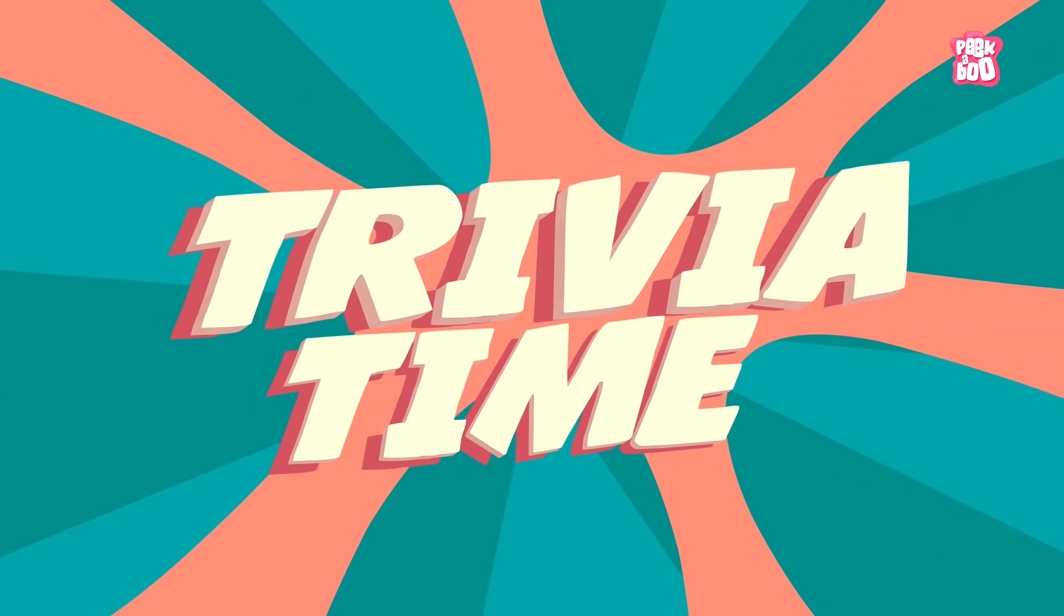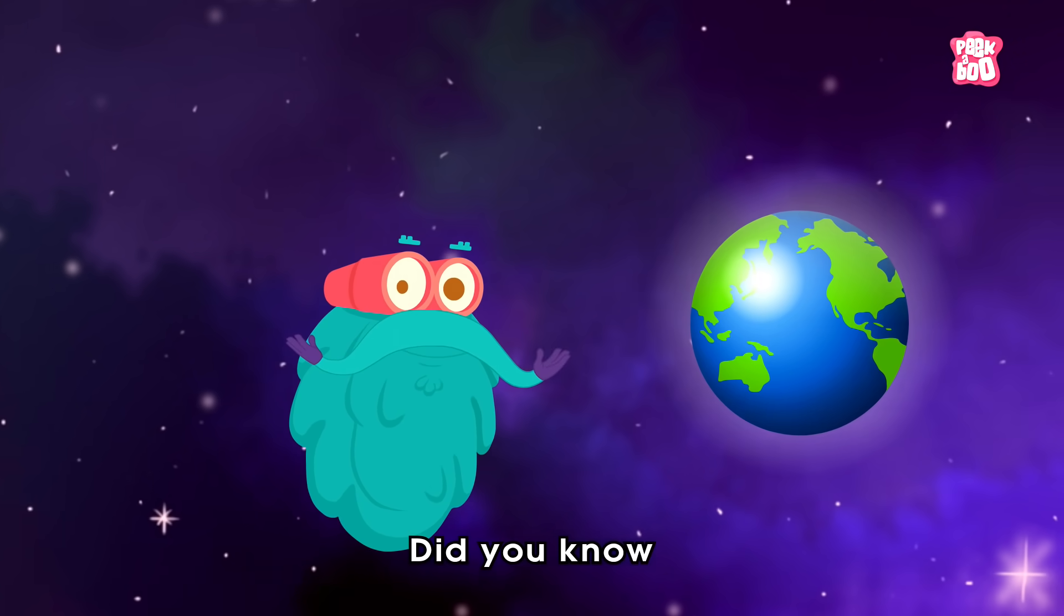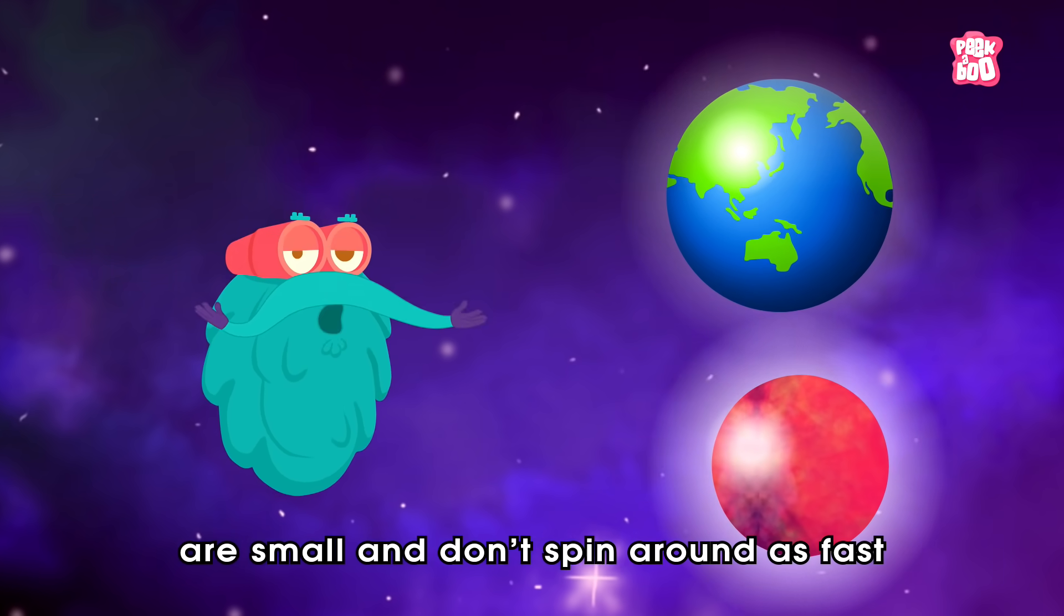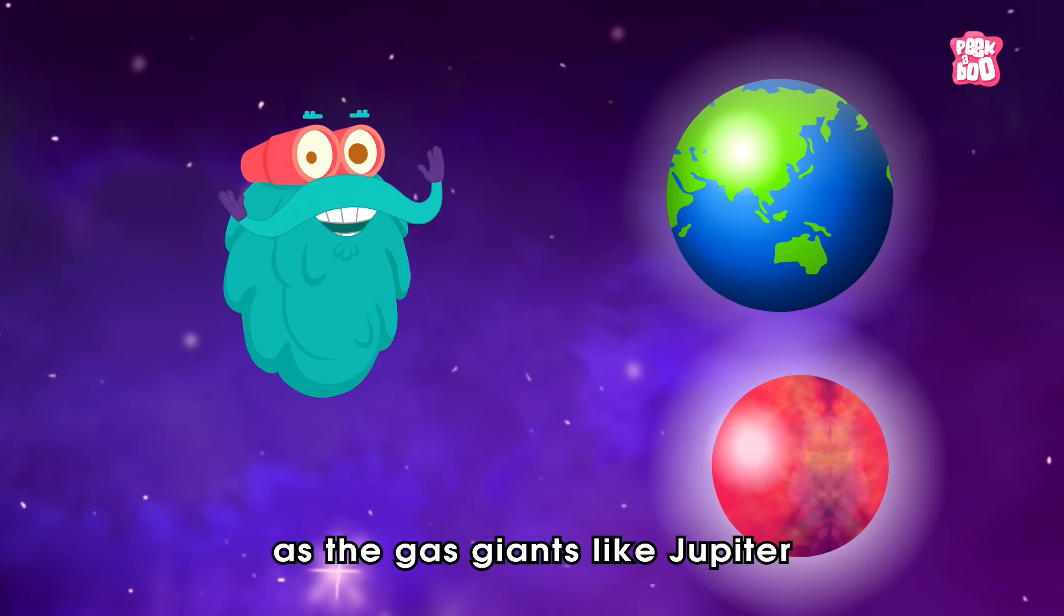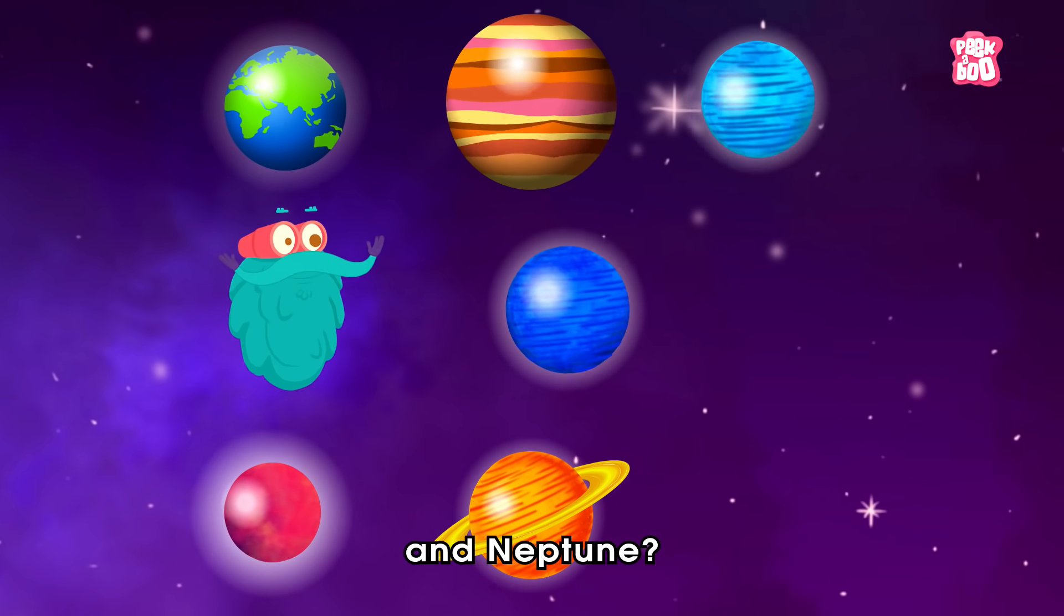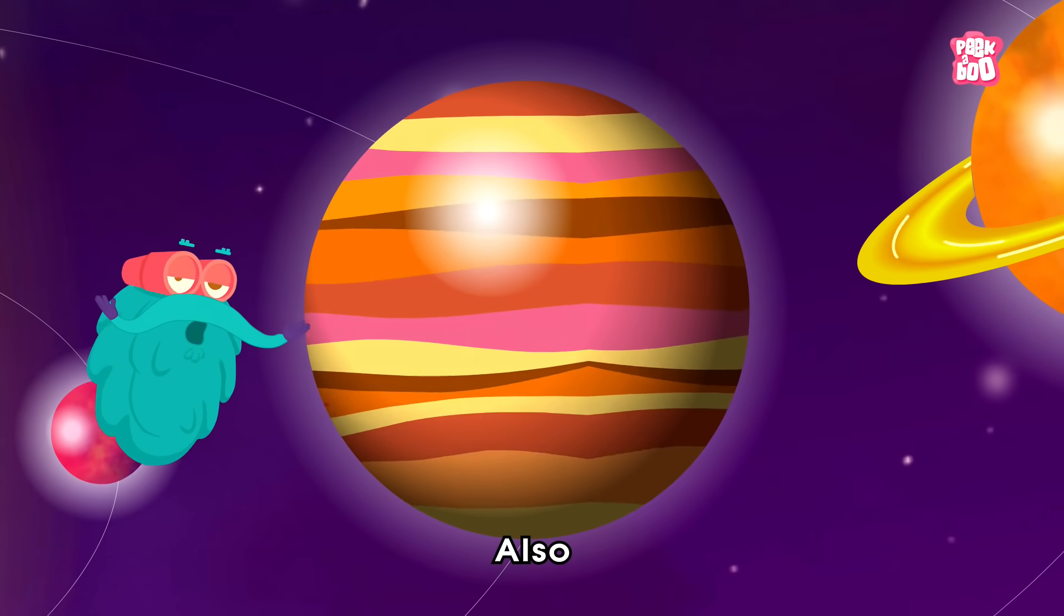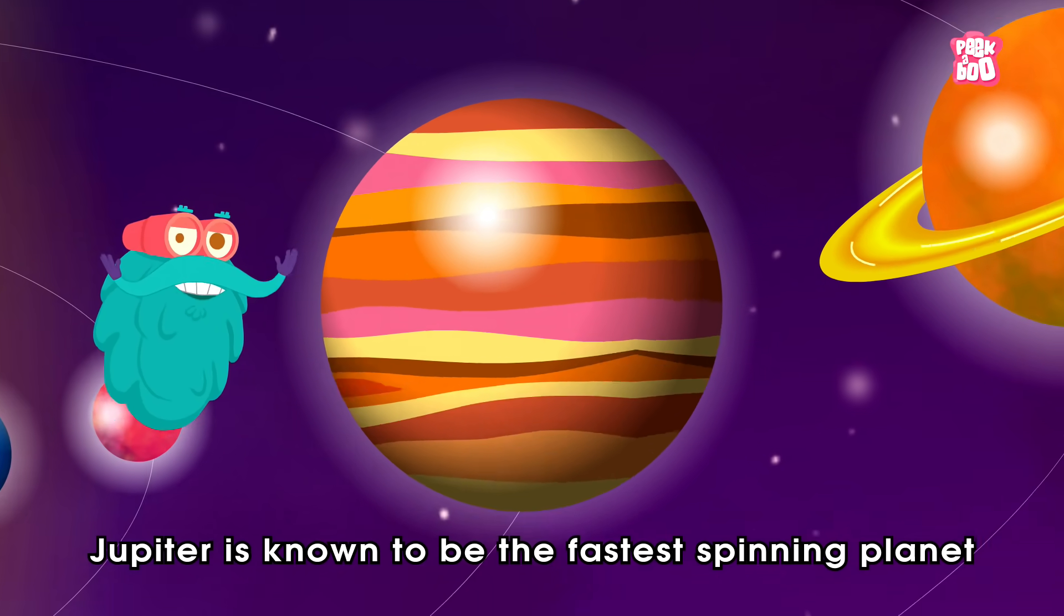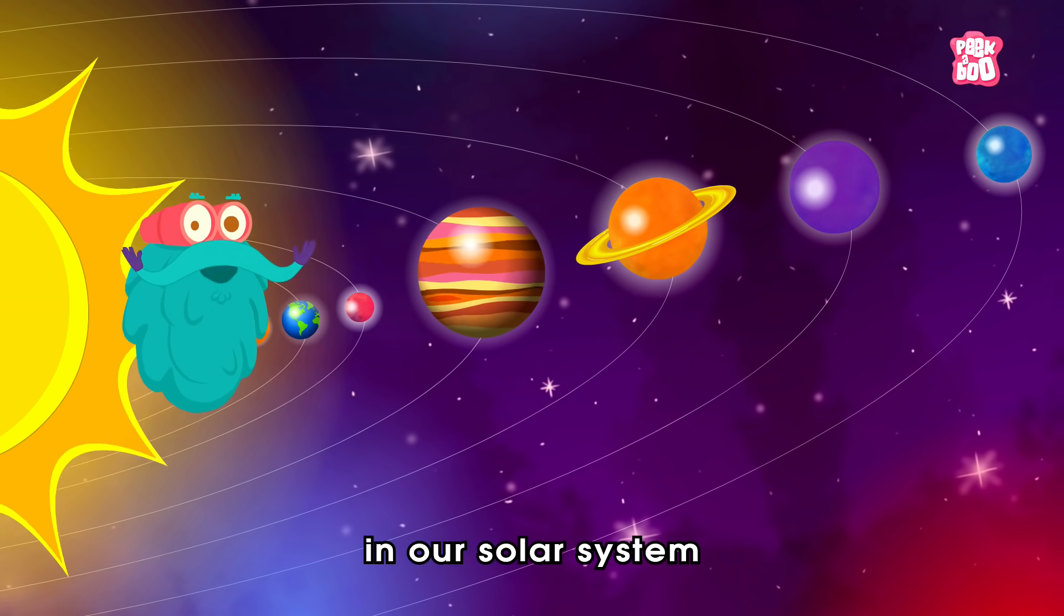Trivia time! Did you know, Earth and Mars are small and don't spin around as fast as the gas giants like Jupiter, Saturn, Uranus and Neptune. Also, Jupiter is known to be the fastest spinning planet in our solar system.